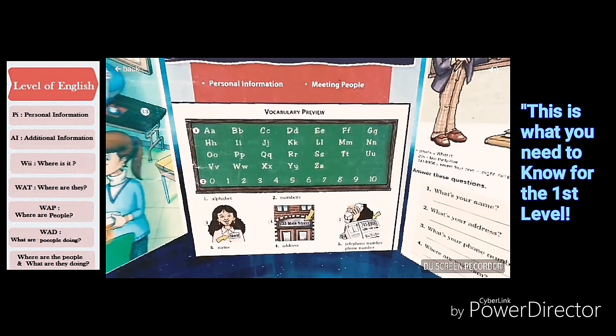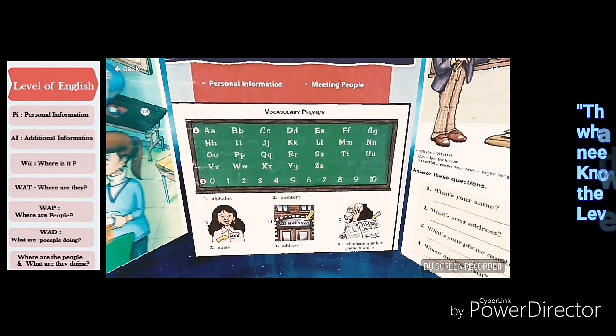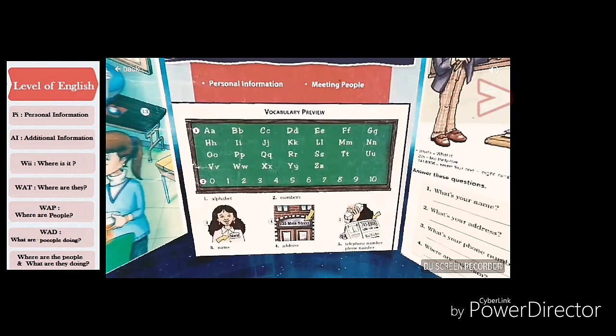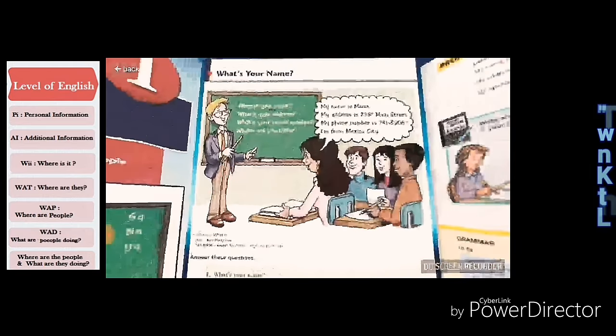And also the vocabulary for the focus section for personal information is name, address, and telephone number or phone number. Alphabet and numbers you need to practice on your own. You can practice on your own time.